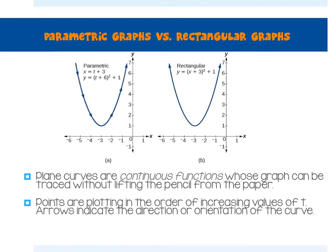We'll graph with directions. Notice that it doesn't start with an arrow because that same T would be maybe T=0 there. It has direction, so you see these arrows pointing as I move further along the value of T. The plane curves are continuous functions — you'll never have to pick up your stylus and put it back down again with a gap. Once you start graphing, it's one fluid curve. Points are plotted in the order of increasing values of T.